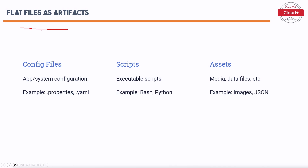Flat files are essential artifact components that include configuration files, scripts, and other resources. The main types are: Config Files — app or system configuration files such as .properties and .yaml files, which store settings and configuration. Scripts — executable scripts such as bash and Python scripts, which automate tasks and processes. Assets — media and data files such as images and JSON files, providing additional resources needed by the application.